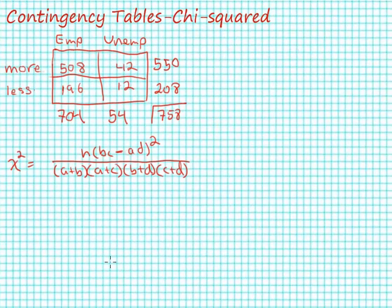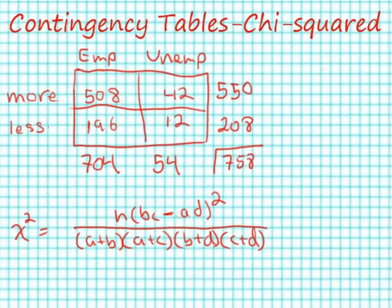There's another formula for calculating chi-square when you have a two-by-two table. Two-by-two tables are very popular in statistics and there's a lot of research done on their properties. I've written the formula here and I've taken the example we've been using comparing employed to unemployed GSS respondents and their attitudes about increasing or decreasing unemployment benefits.